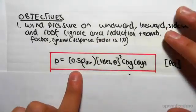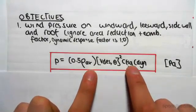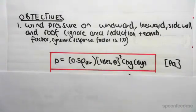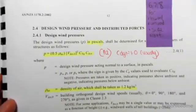So the formula for pressure is 0.5 times the density of air times V_des,θ squared times C_fig times C_dyn. This is from section 2.4.1, page 12.